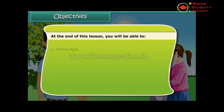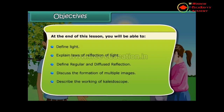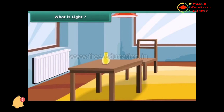Objectives: at the end of this lesson you will be able to define light, explain laws of reflection of light, define regular and diffused reflection, discuss the formation of multiple images, describe the working of a kaleidoscope, and discuss dispersion of light.